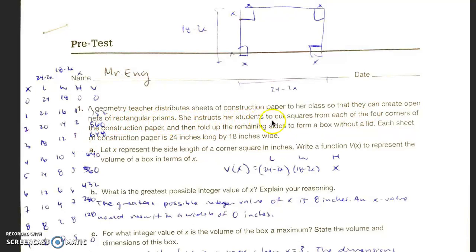She instructs her students to cut squares from each of the four corners of the construction paper and fold up the remaining sides to form a box without a lid. Each sheet of construction paper is 24 inches long by 18 inches wide. Let x represent the side length of the corner square in inches. Write a function b of x to represent the volume of the box in terms of x.